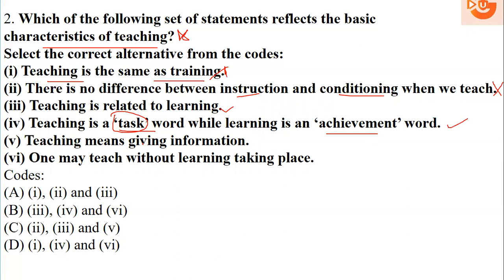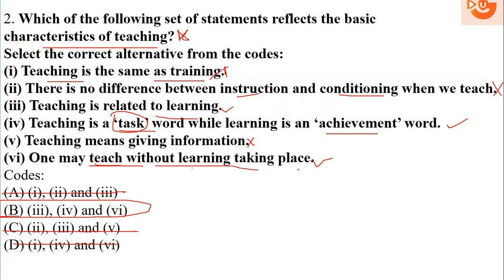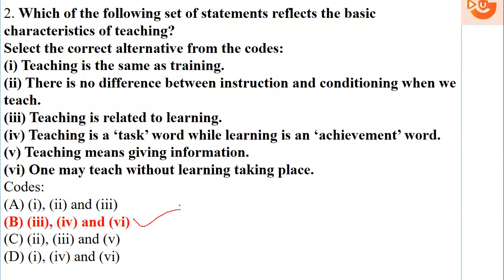Fifth statement: teaching means giving information — it's not only giving information; bohut saari parallel activities hoti rehti hain — so this is struck out. Sixth: one can teach without learning taking place — yes, when students are not attentive, learning nahi hota. So option B is the correct answer: teaching is related to learning, it is a task word while learning is an achievement, and one can teach without learning taking place.